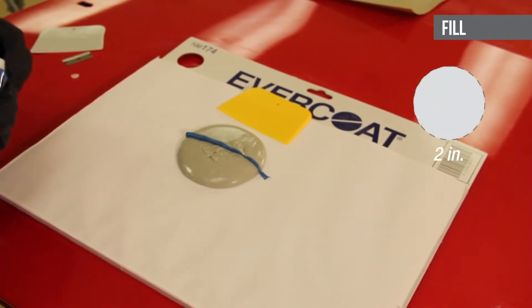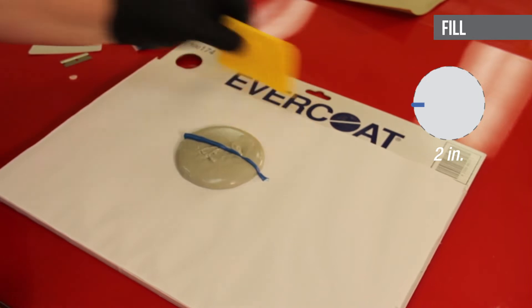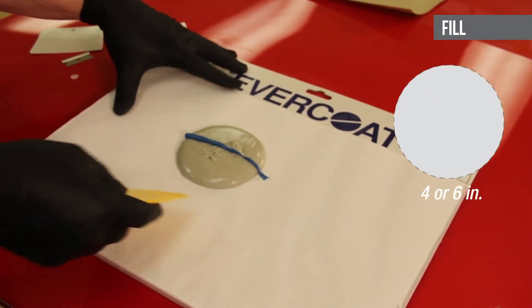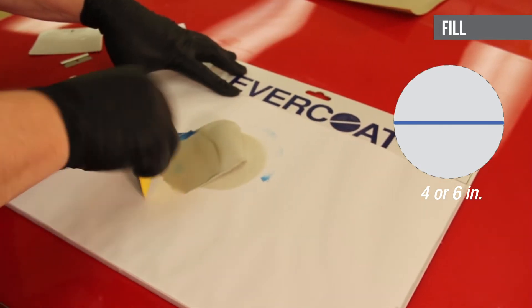For a two inch puddle, squeeze a line of hardener from the center to the edge of the puddle. For a four inch puddle, squeeze a line of hardener across the entire puddle.